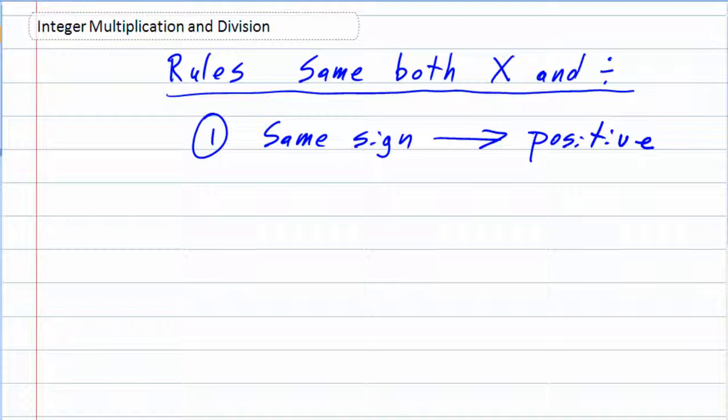So the other possibility, which is why we have a second rule, is what if those signs are different? So if we have different signs, then we're going to have a negative answer.